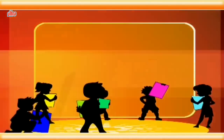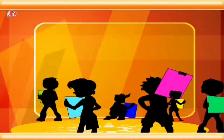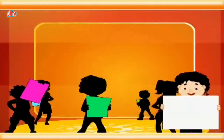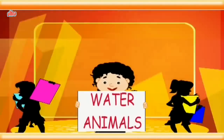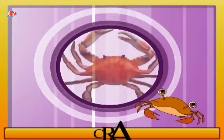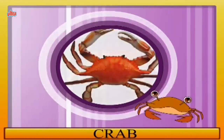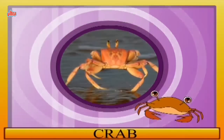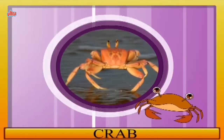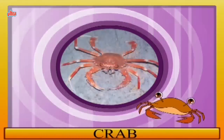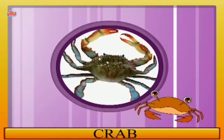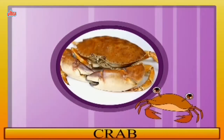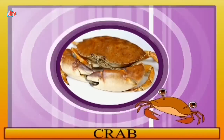Now children, we will learn about water animals. C for crab. Crabs are generally covered with a thick outer skeleton and armed with a single pair of claws.